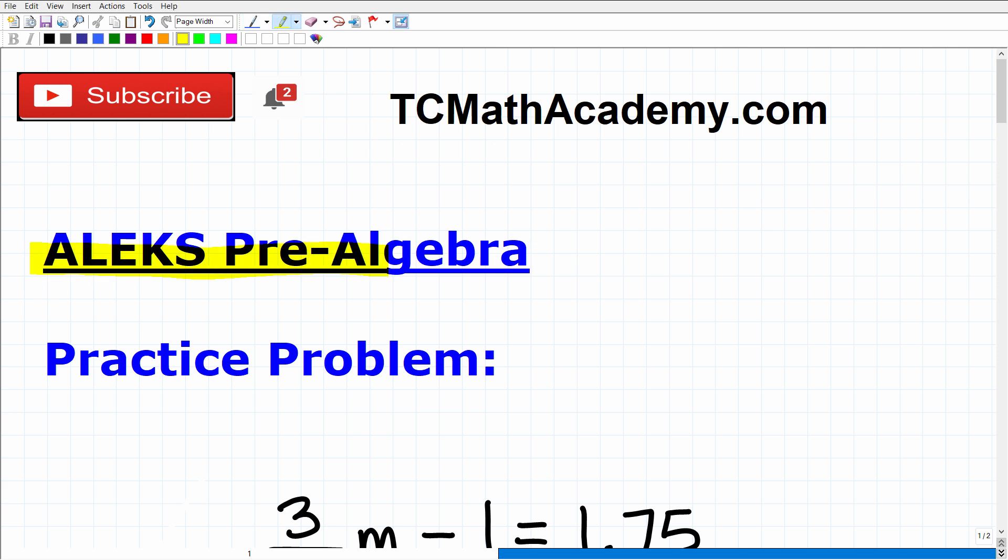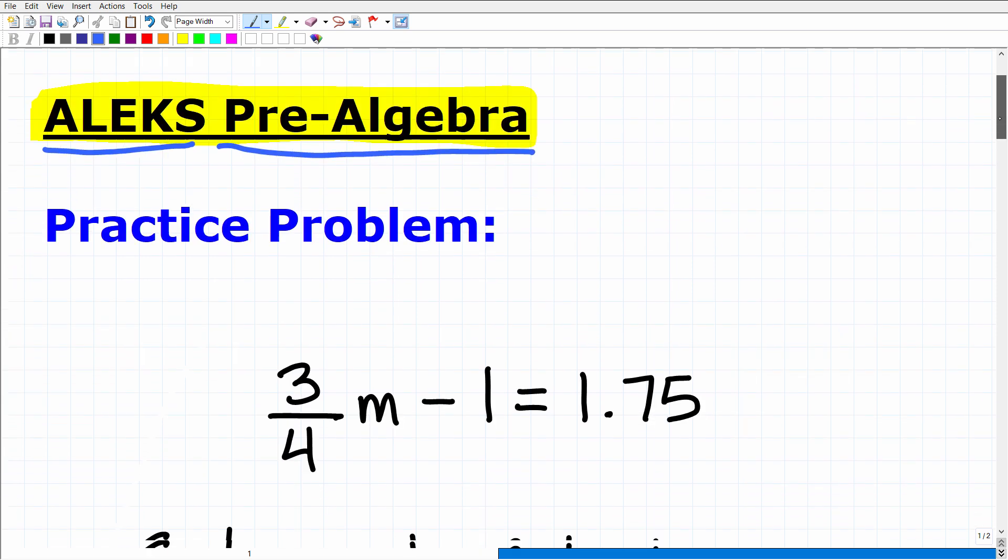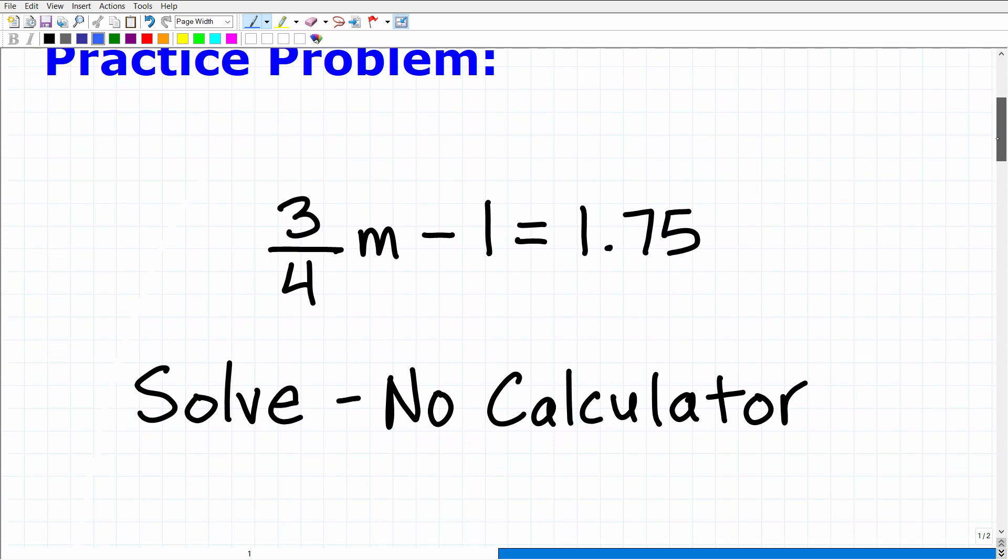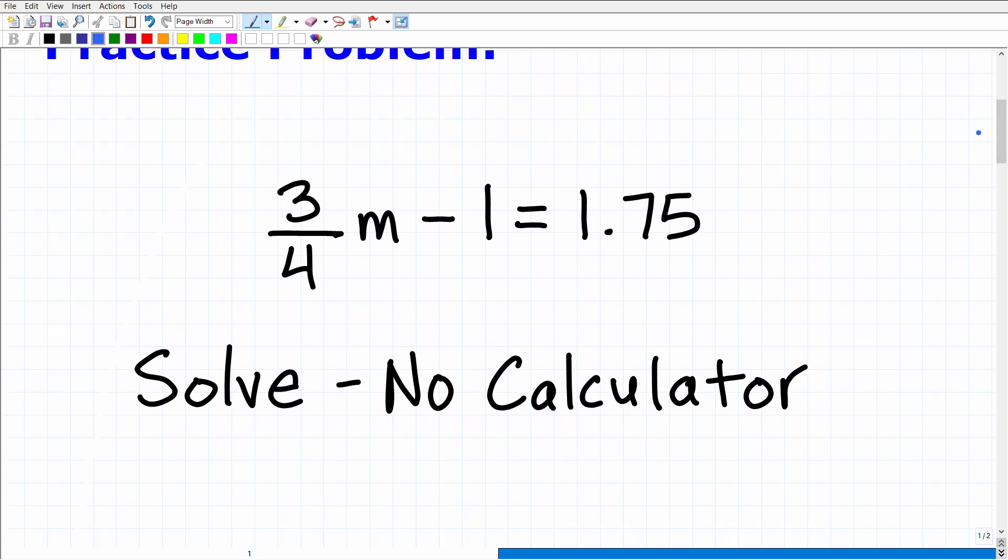Okay, let's talk about ALEKS pre-algebra. The ALEKS system is a very popular system. Many schools and colleges use the ALEKS system for their respective math courses. So if you happen to be taking ALEKS pre-algebra, which I assume you are by virtue of watching this video, what I have here for you is a practice problem that you should be able to handle without too much difficulty if you're doing pretty well in pre-algebra. So here is the problem. You can see it, but I'll just read it to you. We have three-fourths M minus one is equal to 1.75.